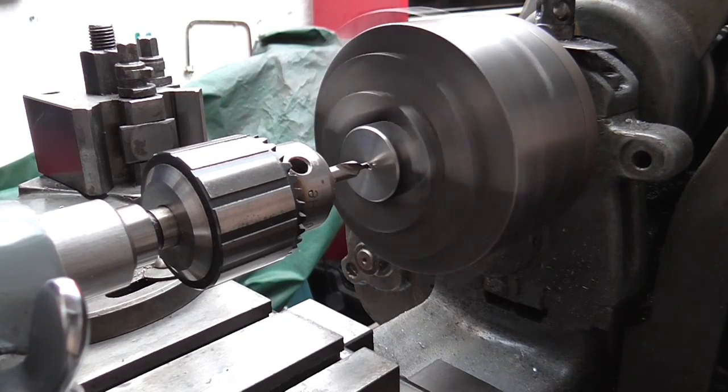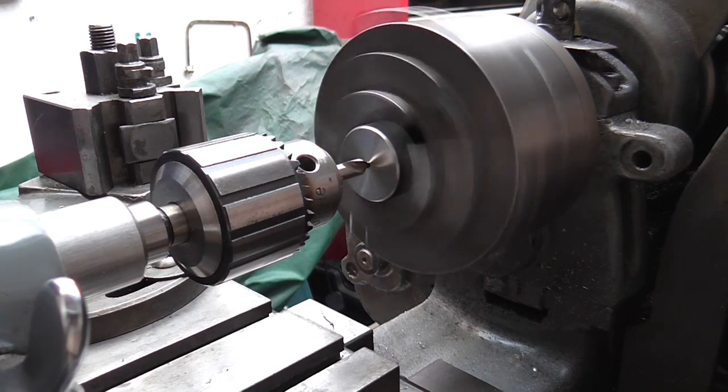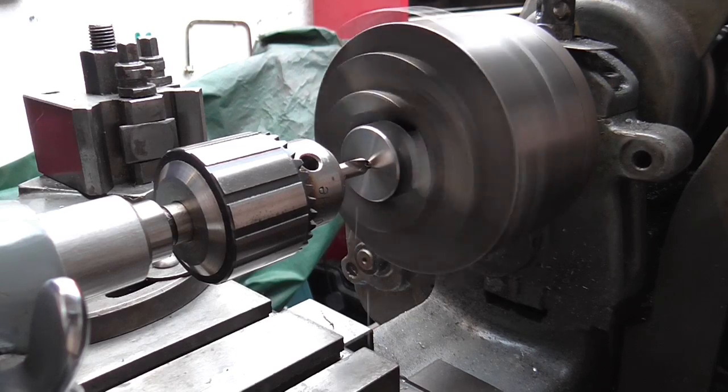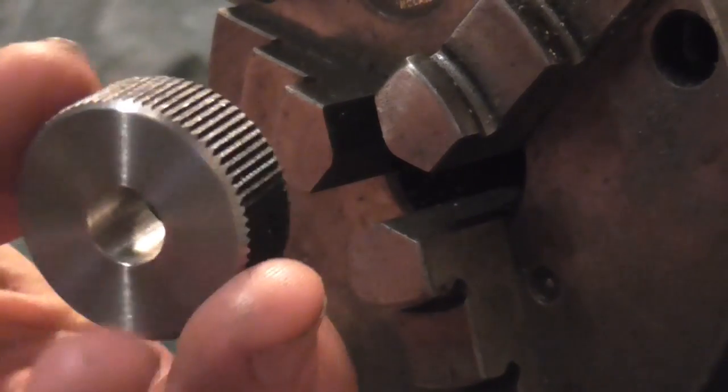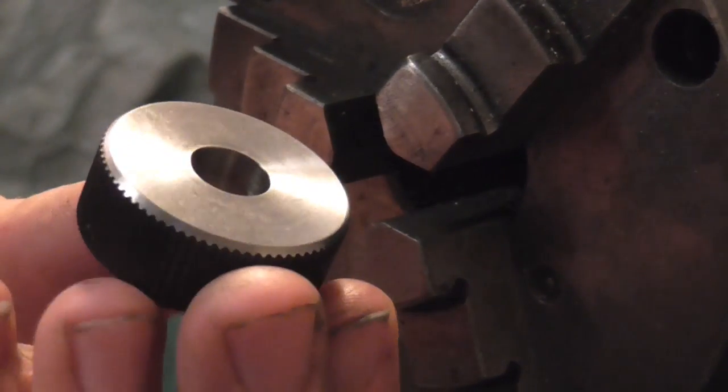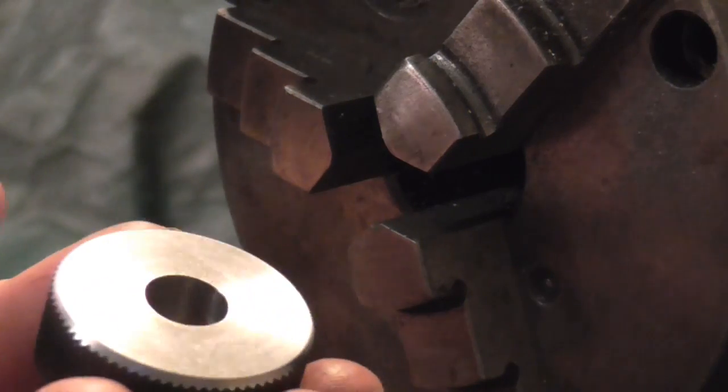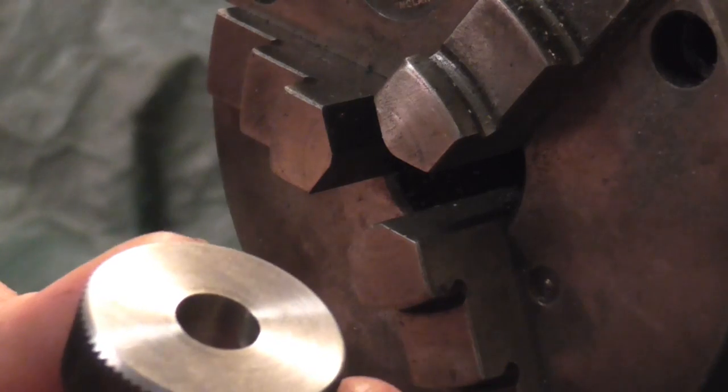Rather than make something from scratch I found this knurled knob and I'm just going to doctor it slightly to fit the build. There is the knurled piece ready to be attached. To actually fix it on and drive it I think I'm going to put a grub screw through the side and I will do that now.